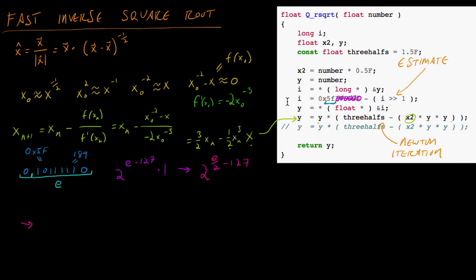Next, 0x5F is the exponent part — that's 189 in decimal. So we compute two to the (0x5F − E/2 − 127), which is 189 subtracted into the exponent. When you simplify this, it comes out to two to the power of (62 − E/2). This formula gives a really good estimate for the inverse square root.